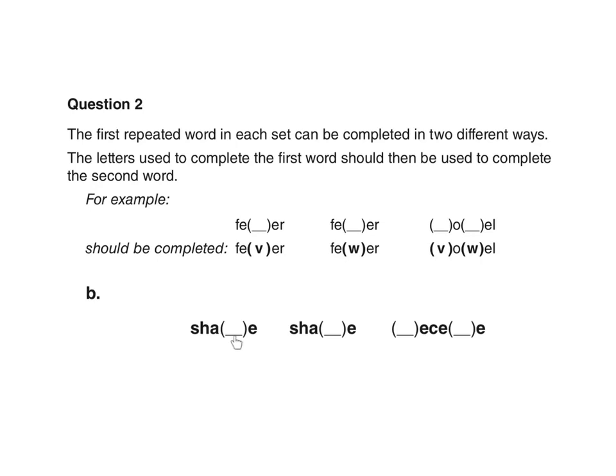Part B: We're going to choose a letter to complete the first word in one way, and then in a second way, and then use those two letters, one here and then here, in order to make a new word here.